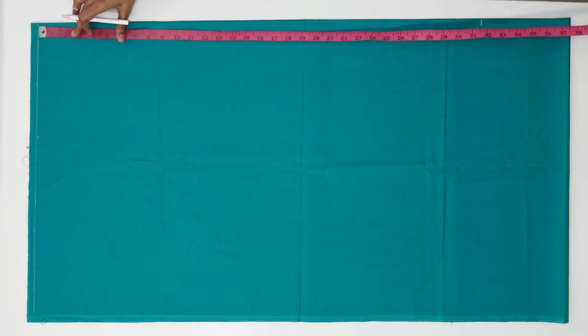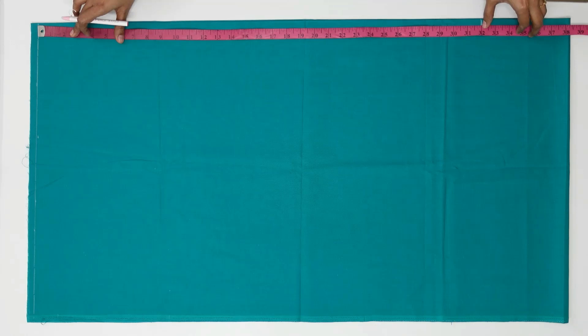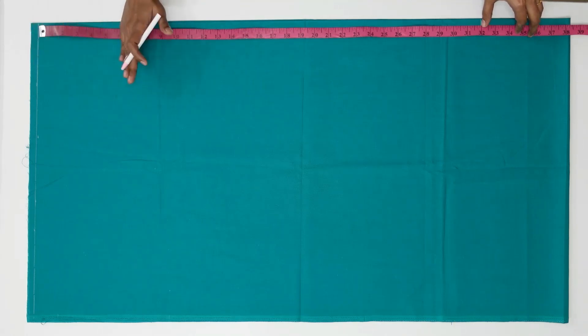So total length, if you measure it is 32 inch here. So if you add the waistband 8 inch, it will come 40. So I am leaving 1.5 inch extra here for folding the ankle.